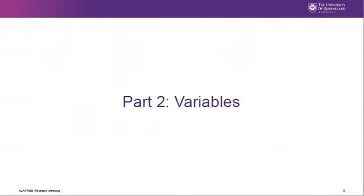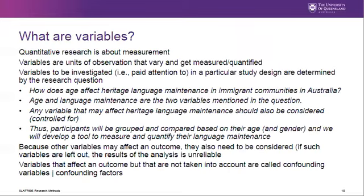Let's turn to variables. I've already used the term 'variables' throughout this lecture and also in previous lectures, and I'm hoping that through context you were able to develop an intuition for what they mean. Today, however, we're aiming to provide a more formalized definition. Quantitative research is all about measurement, and so variables are units of observation that vary in our research and that get measured or quantified. The opposite of a variable is a constant.